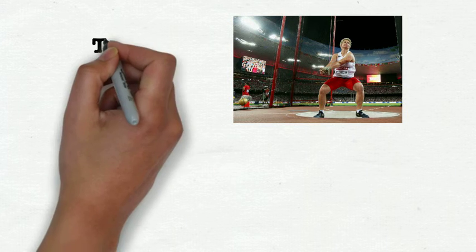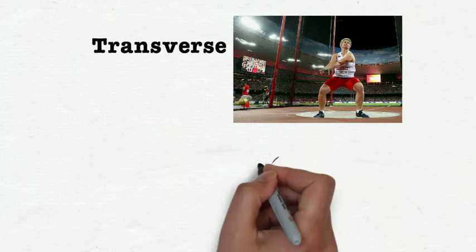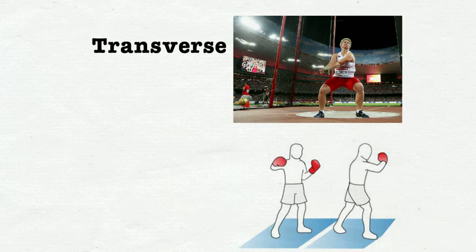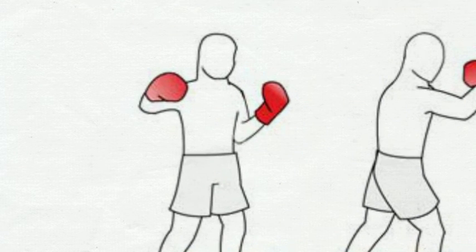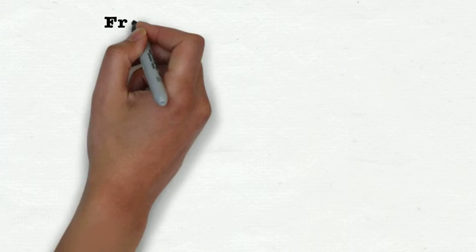So here, obviously, there's a rotation. So hopefully we can identify that this would be in the transverse plane. Another example here, let's say a hook in boxing. So we've got the arm moving round. So that's an element of rotation there.